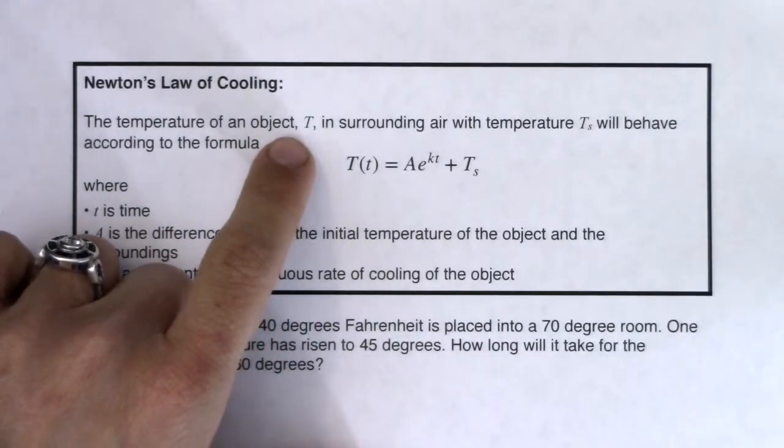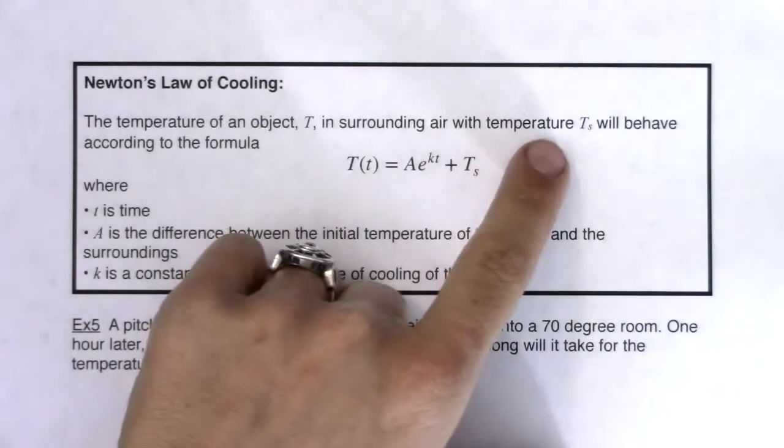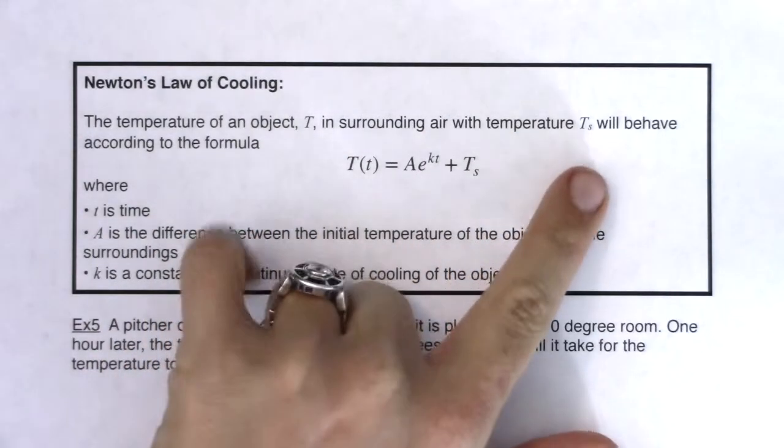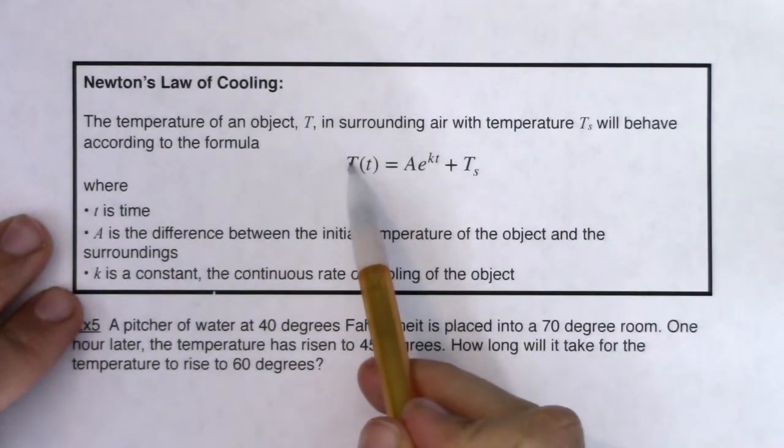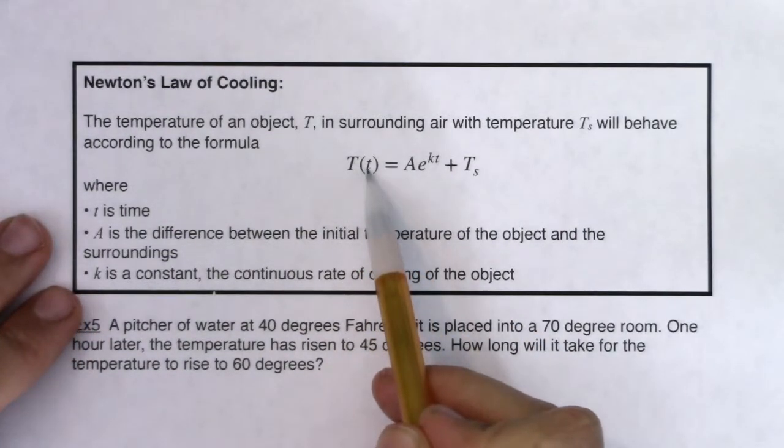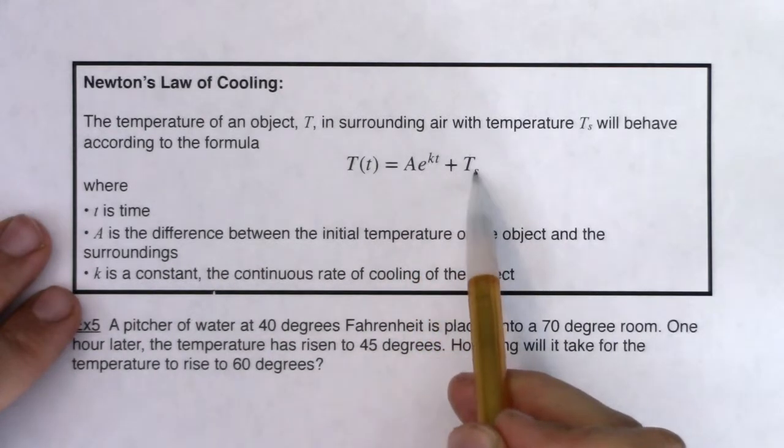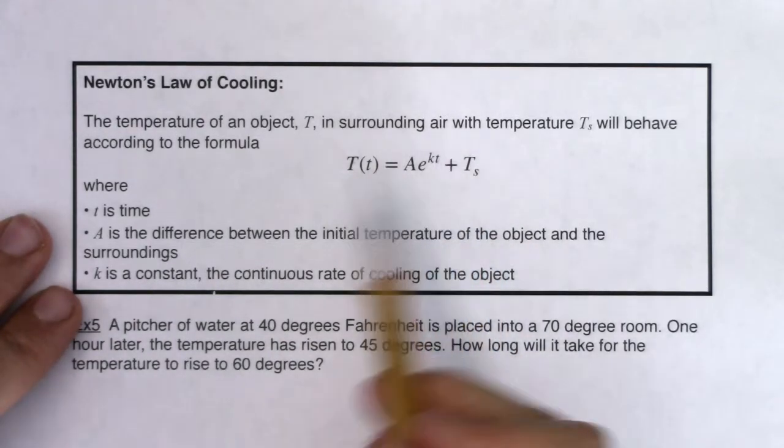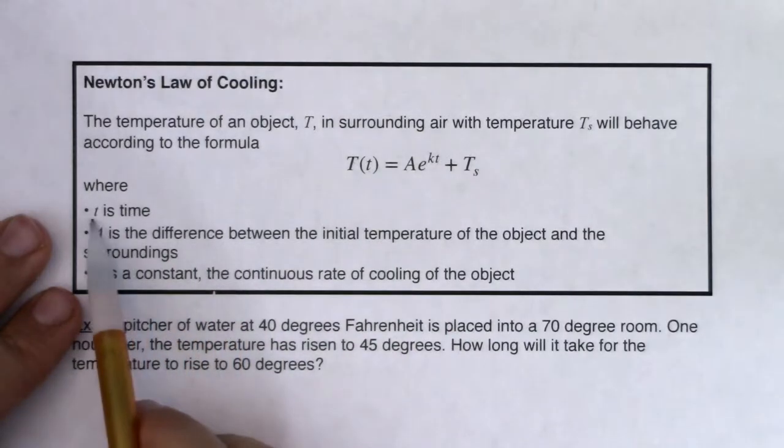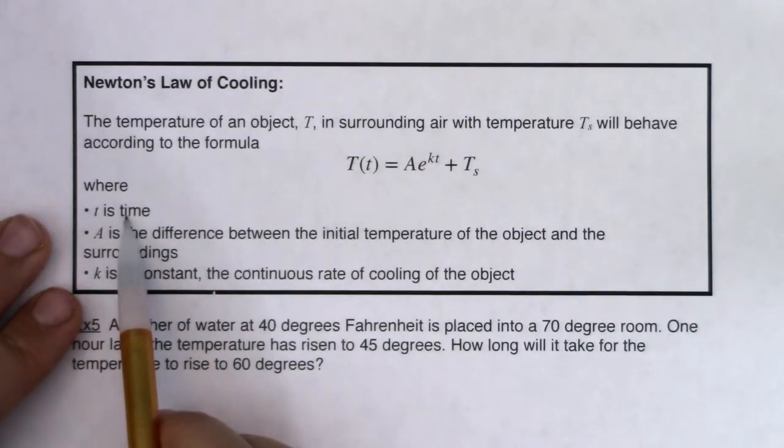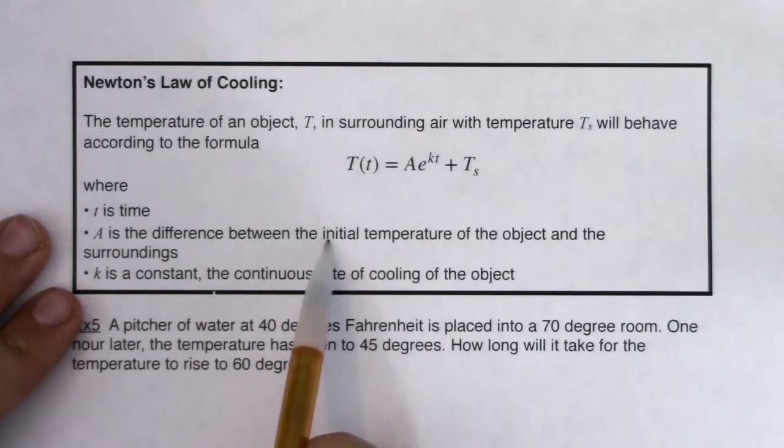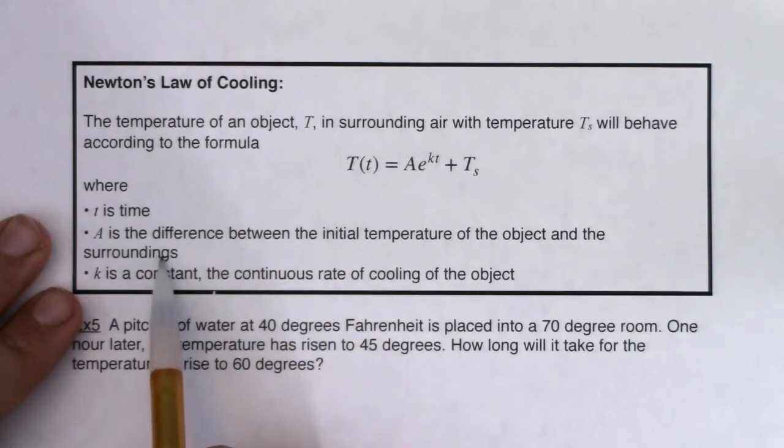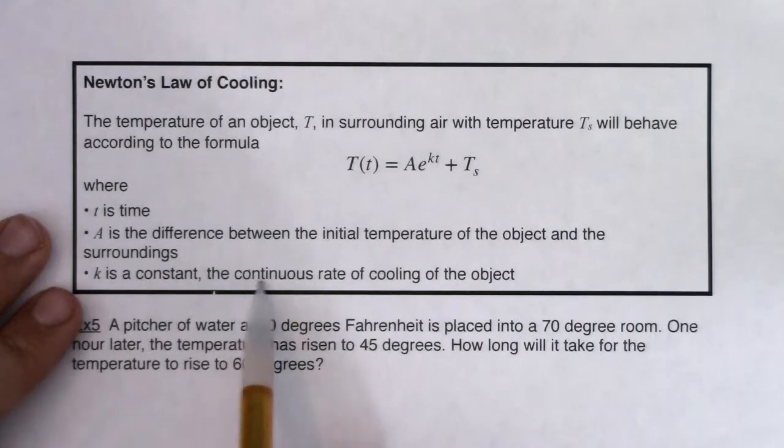So the temperature of an object T in surrounding air temperature T sub s will behave according to the formula and here it is. So capital T evaluated at little t is equal to AE to the KT plus T sub s and I know that sounds like a lot but let's see what all of these letters represent. So little t is time. A, it's the difference between your initial temperature of your object and its surroundings and K is a constant, the continuous rate of cooling of the object.